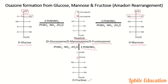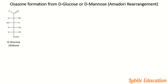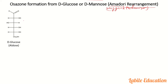Now we will take each step one by one and discuss the mechanism of osazone formation. The mechanism used to explain osazone formation is called the Vogan mechanism, and within that mechanism we will also see the Amadori rearrangement.